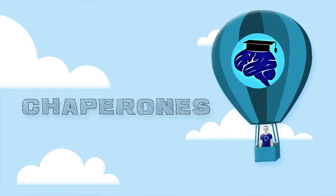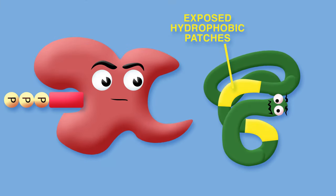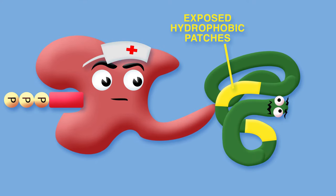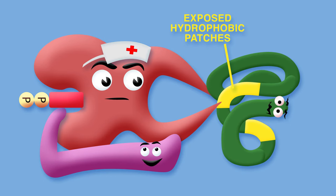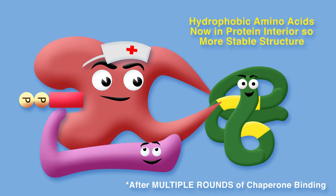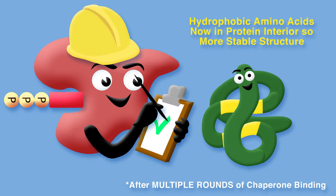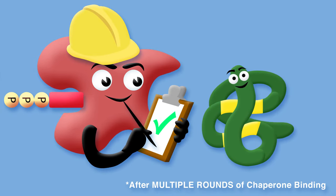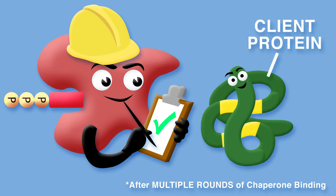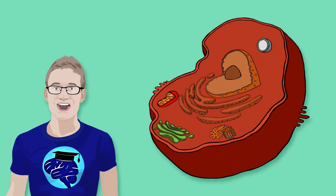Chaperones work by binding to exposed hydrophobic patches on misfolded or incompletely folded proteins, and hydrolyzing ATP. Some of the energy expended by chaperones is used to perform mechanical work, but much more is used to ensure the accuracy of protein folding. The proteins that chaperones help fold properly are called client proteins. There are several families of molecular chaperones in eukaryotes, which function in different organelles.